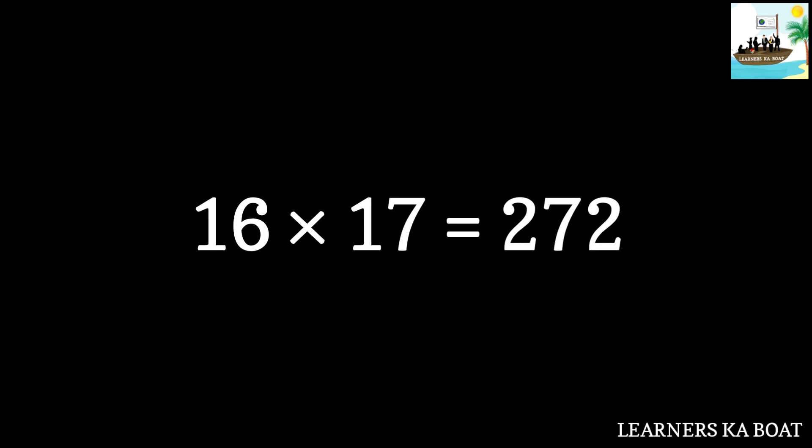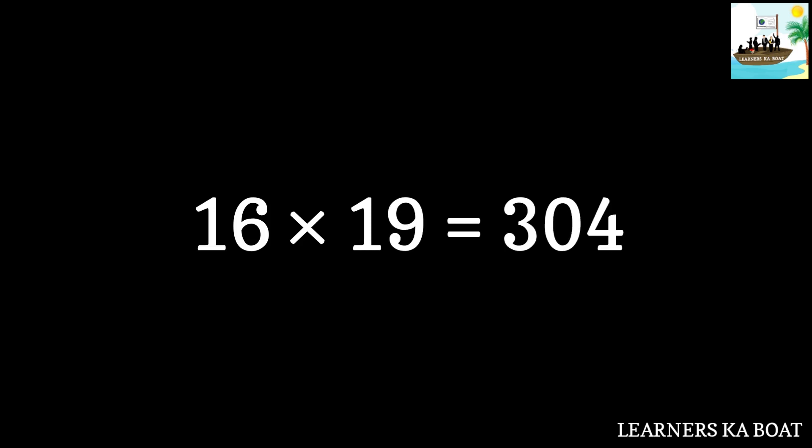16 seventeens are 272. 16 eighteens are 288. 16 nineteens are 304. 16 twenties are 320.